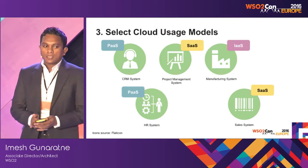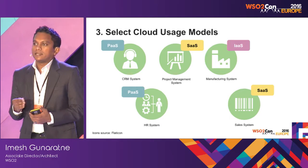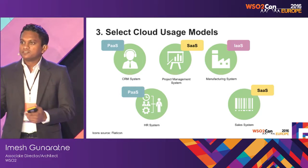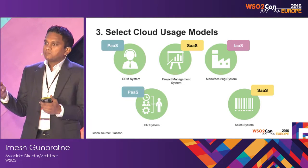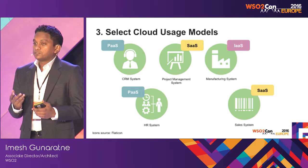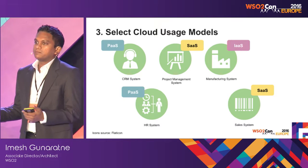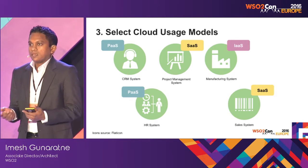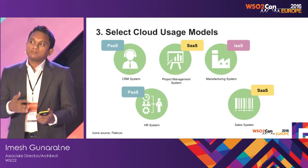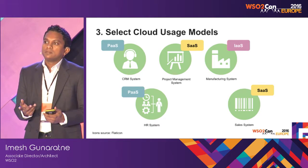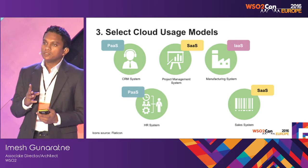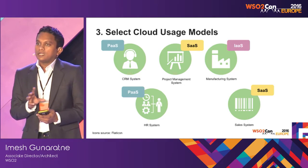Once we are done with that, we can identify different cloud models that the selected systems would fit in. A manufacturing system, which might be a legacy one, may not be able to run on platform as a service, but should be able to run on infrastructure as a service, since it just provides a set of VMs and networking. Some systems might run on PaaS, and some even on SaaS. We can categorize them into different deployment models and label them.